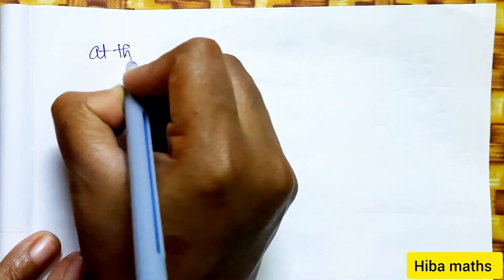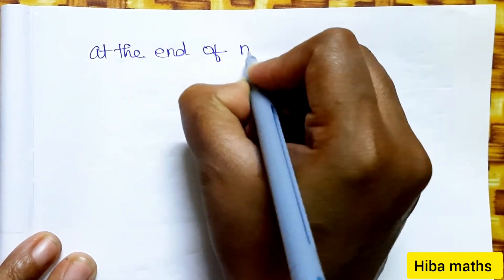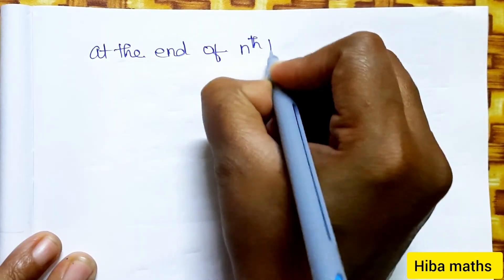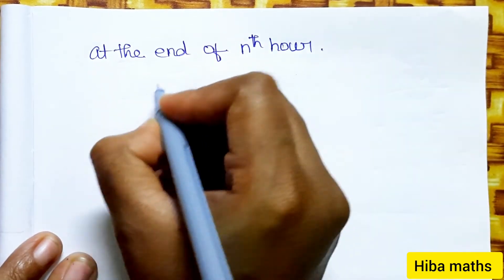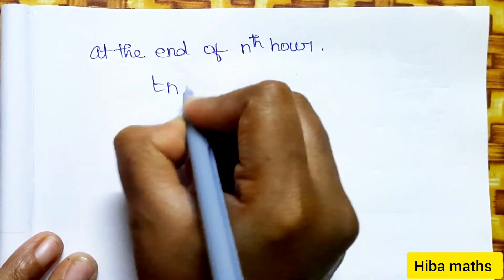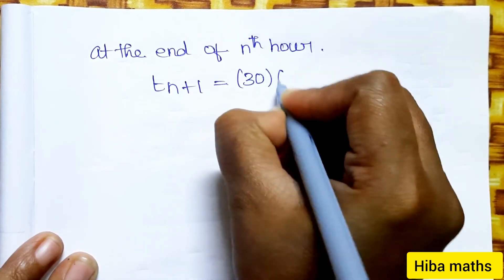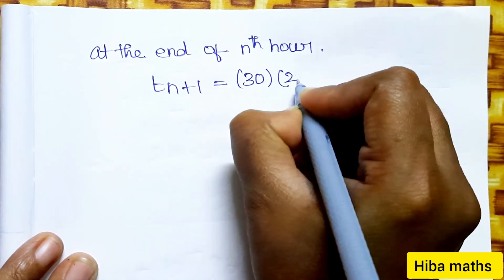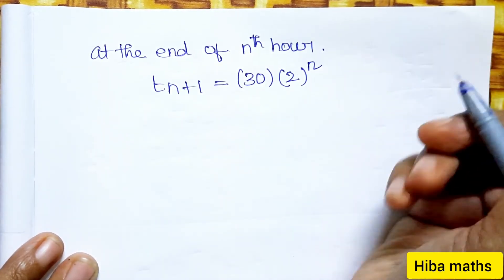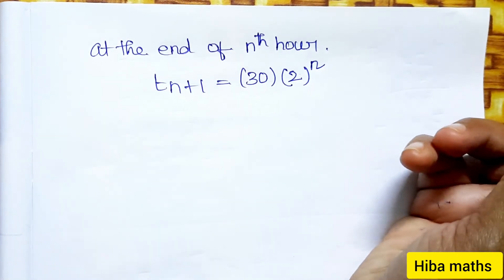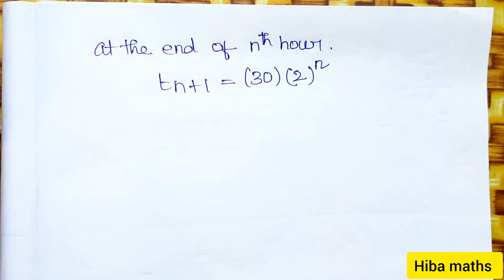For the general nth hour, T(n+1) = a · r^n, where a = 30 and r = 2, giving T(n+1) = 30 · 2^n. Thank you so much for watching.